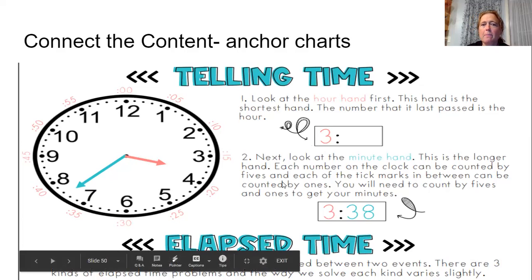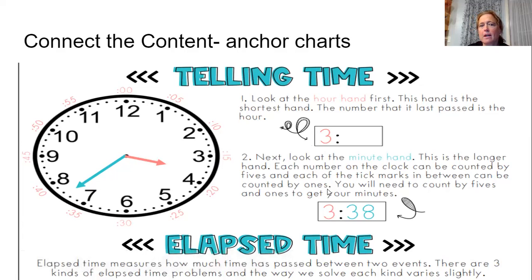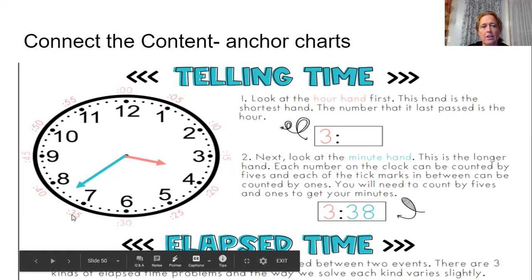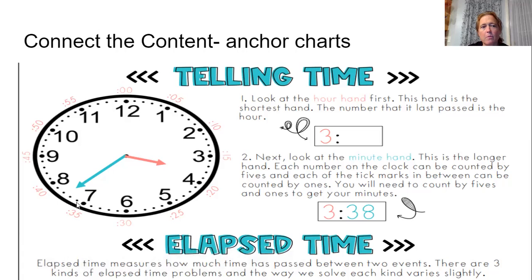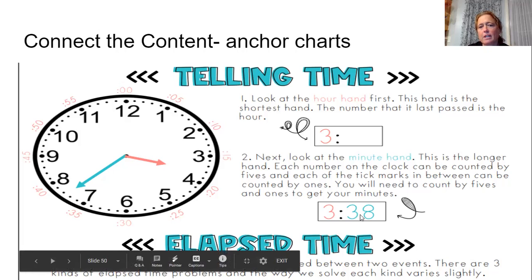And then, of course, to find the minutes. This is the longer hand. Each number on the clock can be counted by fives and each of the tick marks, which are these little marks here, in between can be counted by ones. So if we started counting and we have it labeled here, 5, 10, 15, 20, 25, 30, 35. But look, it hasn't made it to the 40 yet. So then we start counting by ones, 36, 37, 38. So it is indeed 3:38.